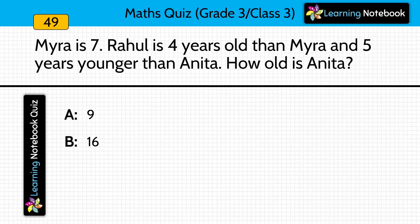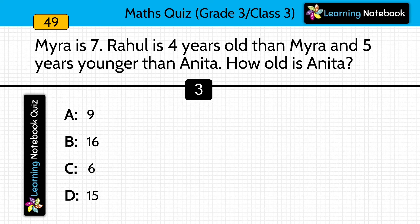Mayra is 7. Rahul is 4 years older than Mayra and 5 years younger than Anita. How old is Anita? Answer is 16. Mayra's age is 7, and Rahul is 4 years older, so Rahul's age is 7 plus 4 equals 11 years. It is also given that Rahul is 5 years younger than Anita, so Anita's age is 11 plus 5 equals 16.